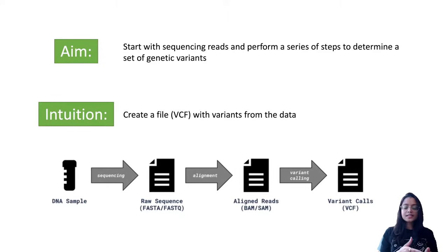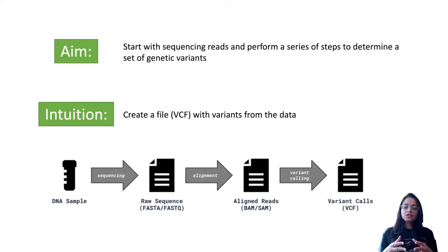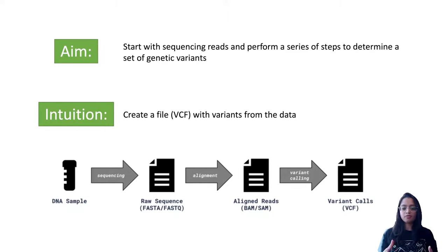The diagram here is a high-level overview of the steps typically performed in a variant calling analysis. The DNA sample is first fed into a sequencer, which gives out reads stored in FASTA or FASTQ format. These reads are aligned to a reference genome to produce aligned reads in BAM or SAM format, and then a variant calling algorithm identifies variants and stores them in a VCF file.